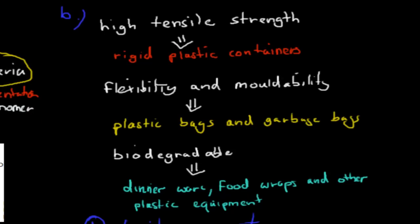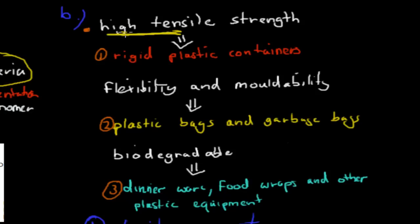Part B: evaluate the use or potential use of the polymer related to its properties. We use PLA for rigid plastic containers, plastic bags and garbage bags, dinnerware, food wraps, and other plastic equipment. We must relate these uses to properties. First, PLA has very high tensile strength — similar to high density polyethylene — which allows us to make strong, rigid containers such as milk containers.